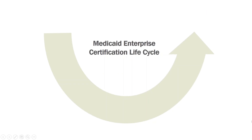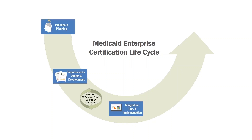The biggest change since the 2007 toolkit is the introduction of milestone reviews throughout the system development life cycle. Every state, regardless of whether it employs an Agile or Waterfall SDLC, goes through a similar set of phases, even if they are called by different names. There is the planning phase, requirements gathering and design, development, test, integration, and operations and maintenance.